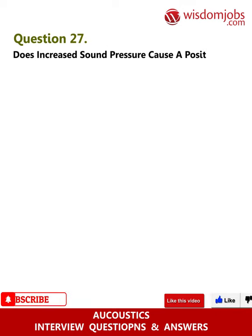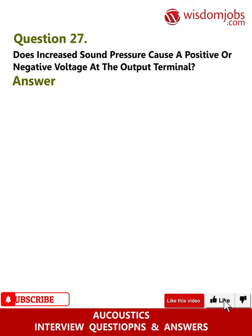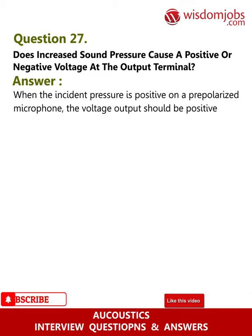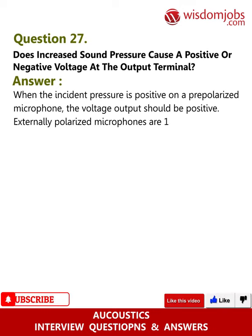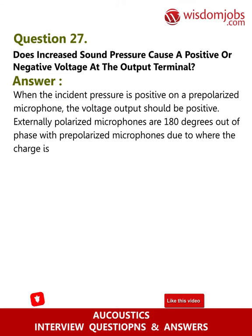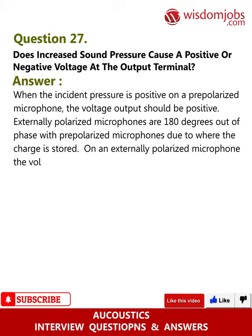Question 27: Does increased sound pressure cause a positive or negative voltage at the output terminal? Answer: When the incident pressure is positive on a pre-polarized microphone, the voltage output should be positive. Externally polarized microphones are 180 degrees out of phase with pre-polarized microphones due to where the charge is stored. On an externally polarized microphone, the voltage output will be negative when the incident pressure is positive.